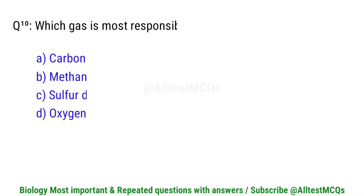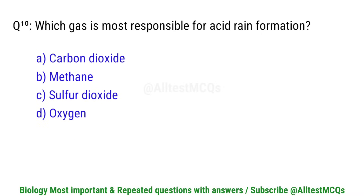Question number 10. Which gas is most responsible for acid rain formation? Right option is C. Sulphur dioxide.